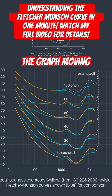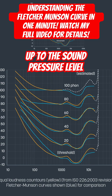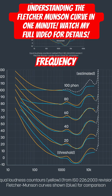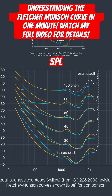1,000 Hz is in the middle of the graph. Moving up to the sound pressure level of 70 dB, you're looking at 70 FONs. But the same frequency at, say, 105 dB SPL at the top is 100 FONs, 105 FONs or so.